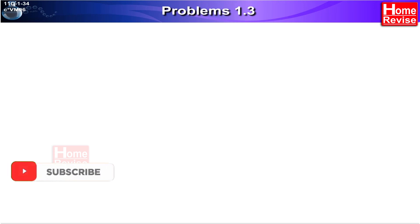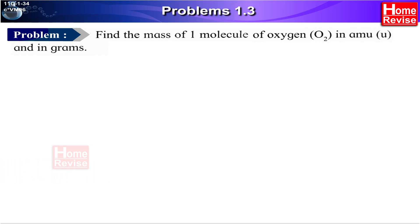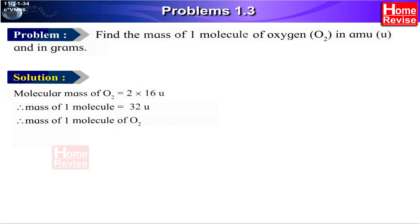Problem 1.3: Find the mass of one molecule of oxygen in atomic mass unit (dalton) and in grams. Solution: Molecular mass of oxygen = 2 × 16 dalton = 32 dalton. Therefore, mass of one molecule of oxygen = 32 × 1.66056 × 10 raised to minus 24 grams.